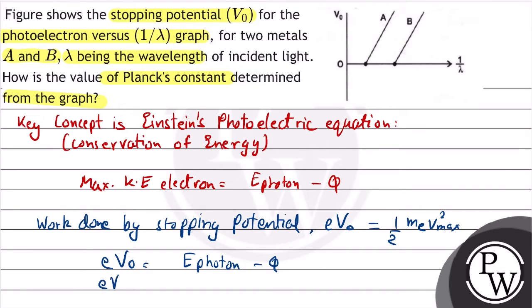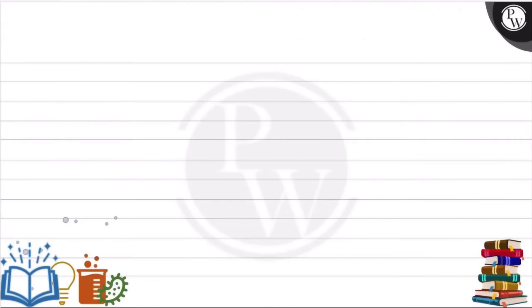For quantum nature of radiation, we have energy of photon equals h times frequency of photon minus phi, which is the work function. We can write eV0 equals h times c over lambda of photon minus phi.